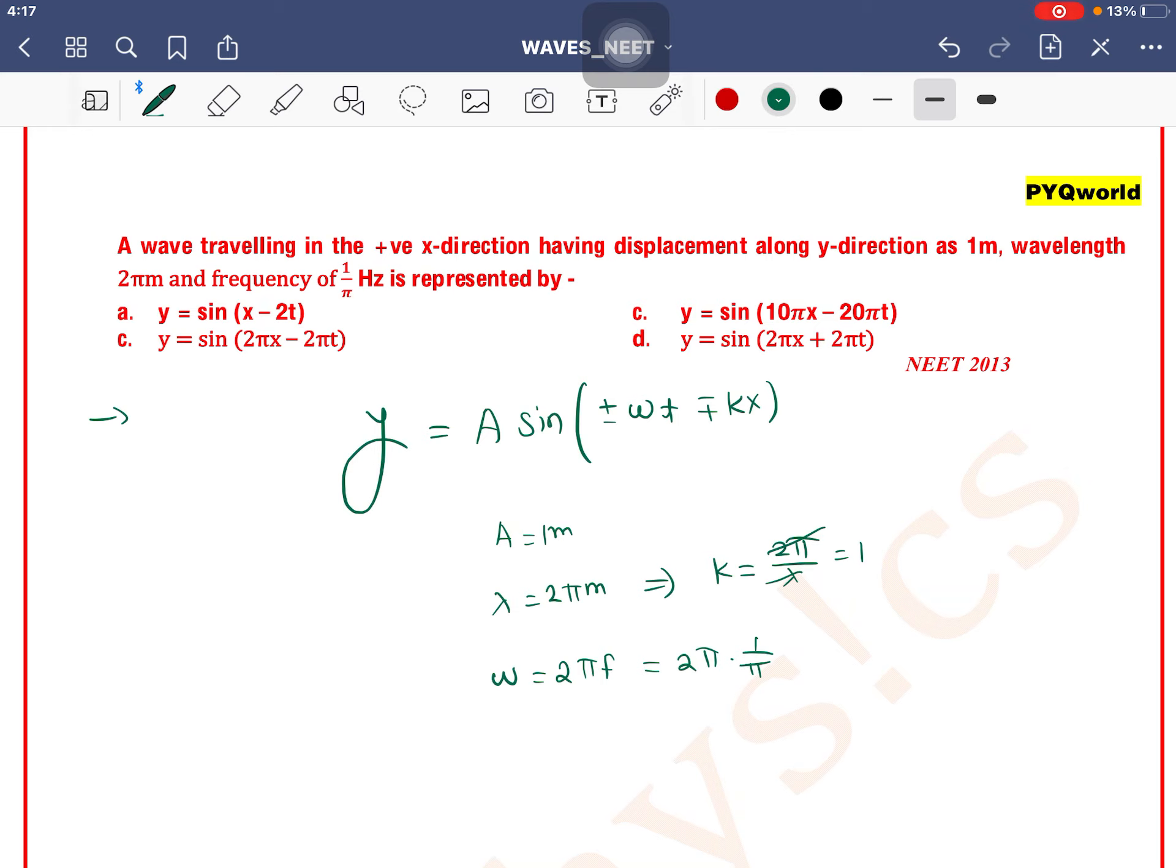f is given as 1/π, so 2π into 1/π equals 2 radian per second. So y can be written as: A is 1, sine of (ωt ± kx), ω is 2, so 2t minus/plus kx.